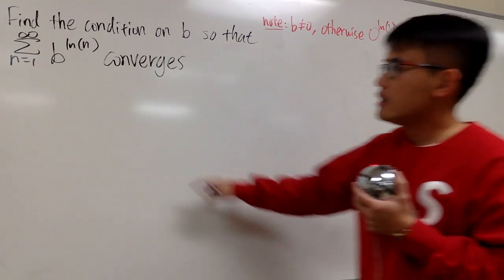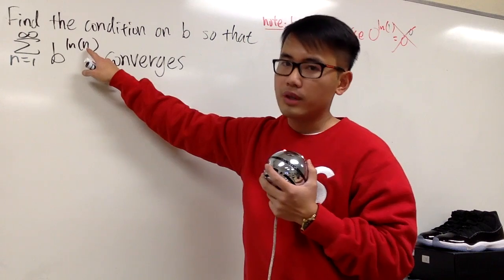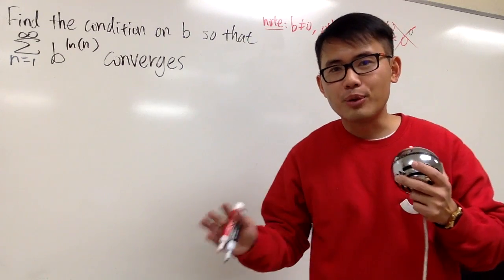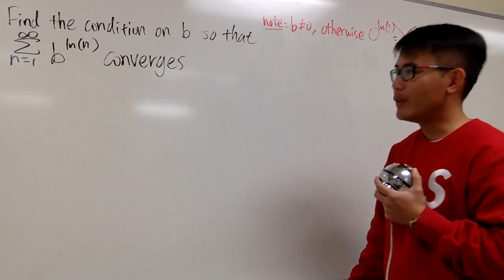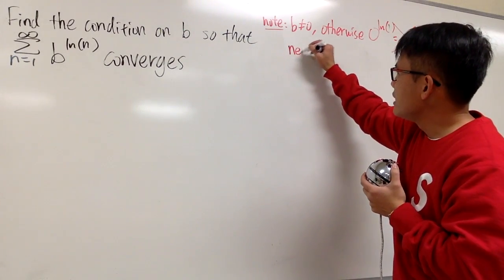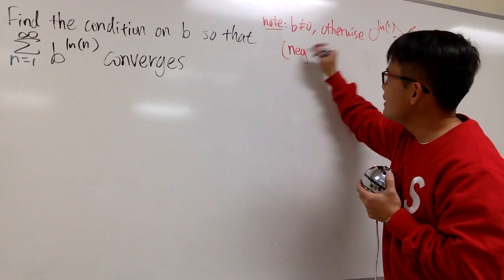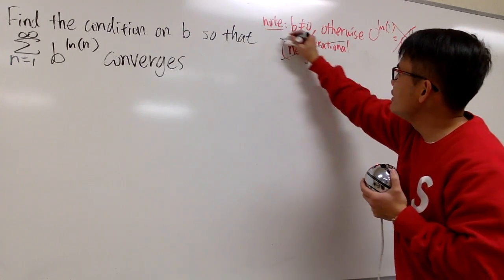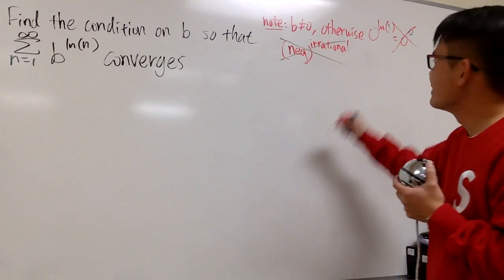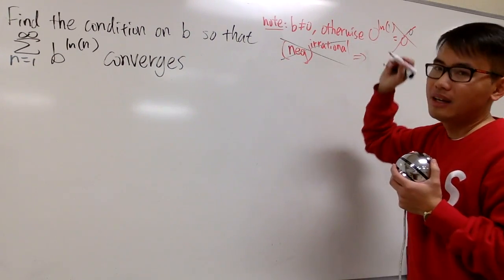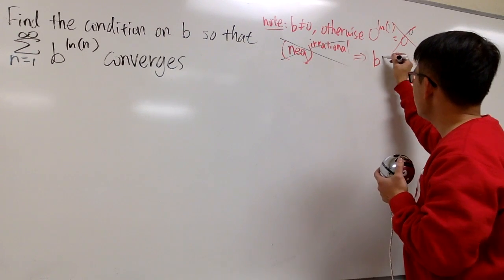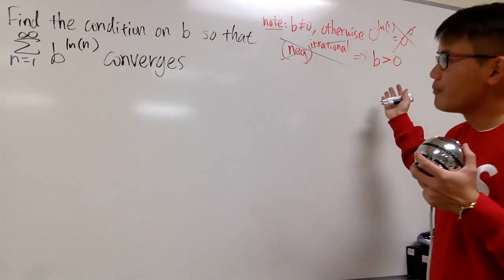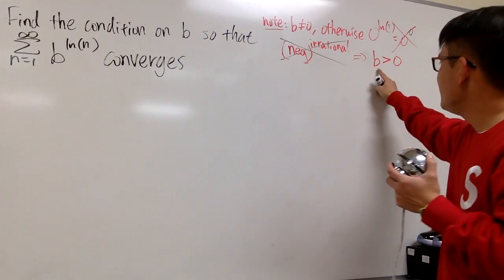Secondly, when n is equal to 2, we have ln 2 for the power, and ln 2 is an irrational number — about 0.693. If you have a negative base and you take it raised to an irrational power, that is also undefined. So this tells us that b cannot be a negative number. It implies that b has to be greater than 0, and b cannot be exactly 0 as we just mentioned. So b has to be positive.